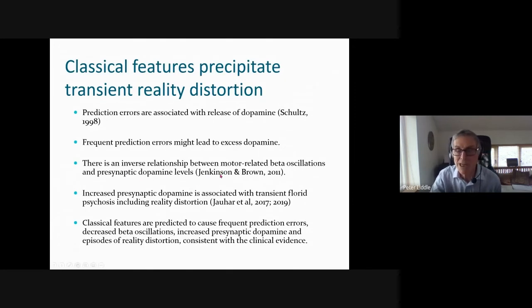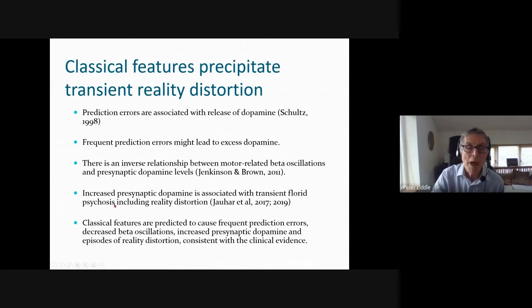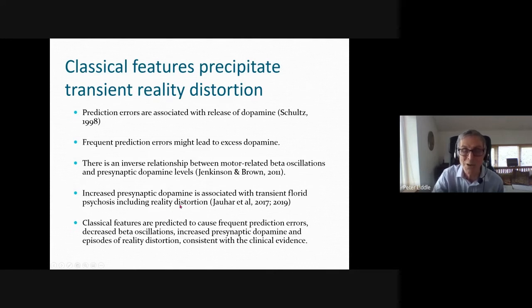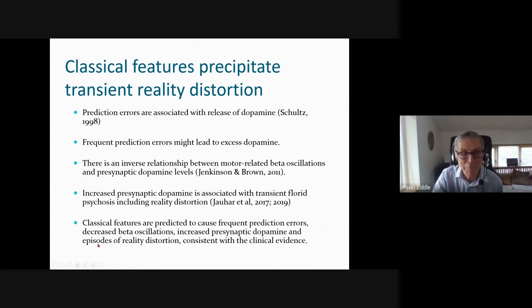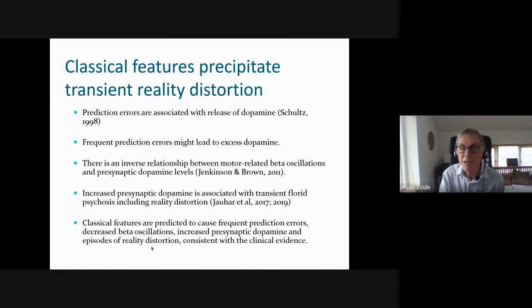What this suggests is that disorganization and negative symptoms cause frequent prediction errors, which decrease beta oscillations and increase presynaptic dopamine, thereby increasing the risk of episodes of delusions and hallucinations. That's how dopamine mediates the relationship between imprecision in predictive coding and the risk of delusions and hallucinations.